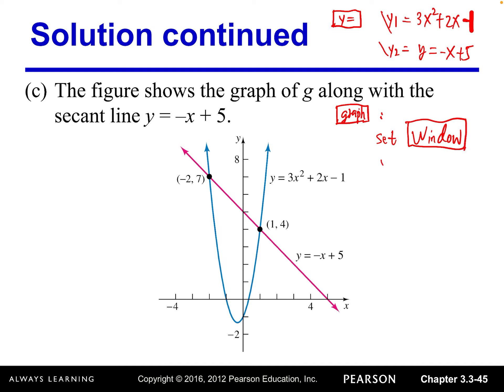To set the window: x-minimum should be a value a little less than −2, so let's say −4. X-maximum should be greater than 1, so let's say 4. Make sure x-minimum is less than −2 and x-maximum is greater than 1 — you can use other values as long as you follow that criteria.